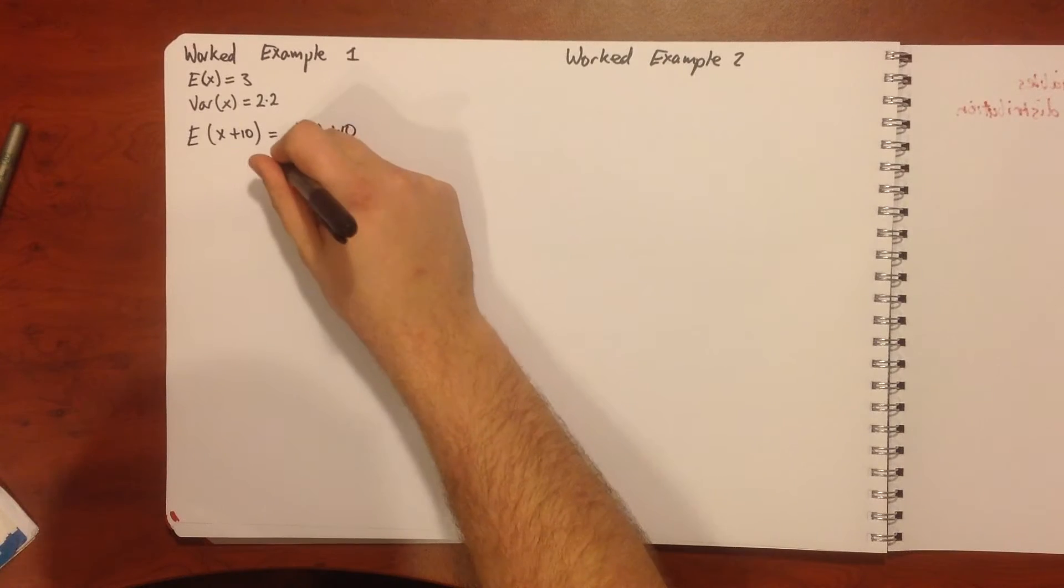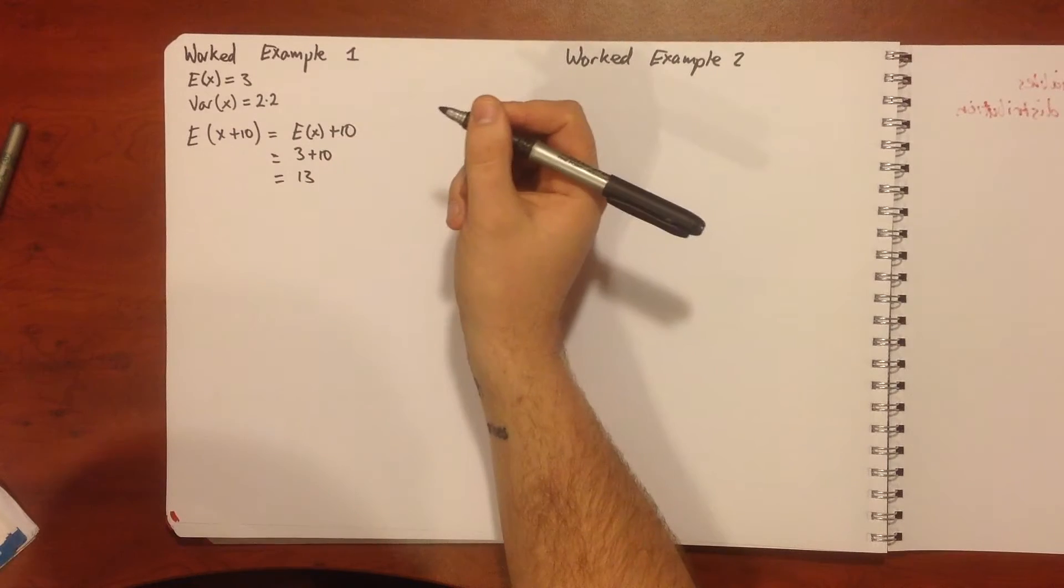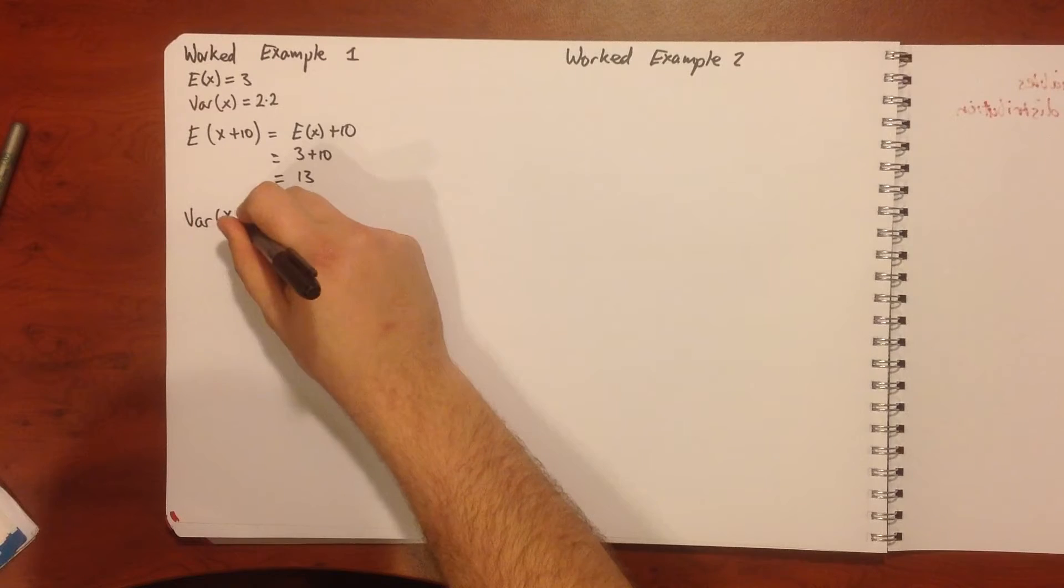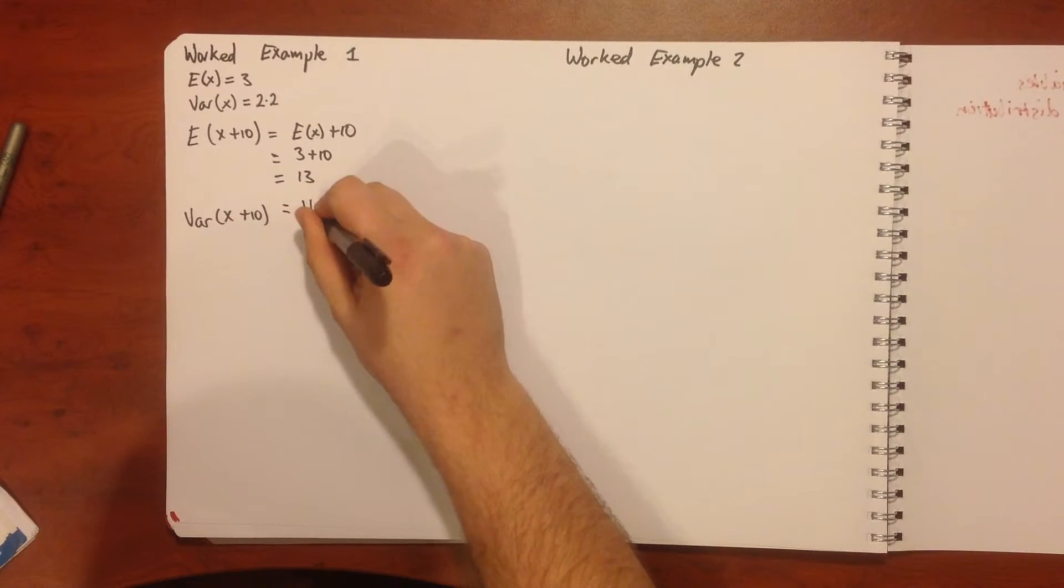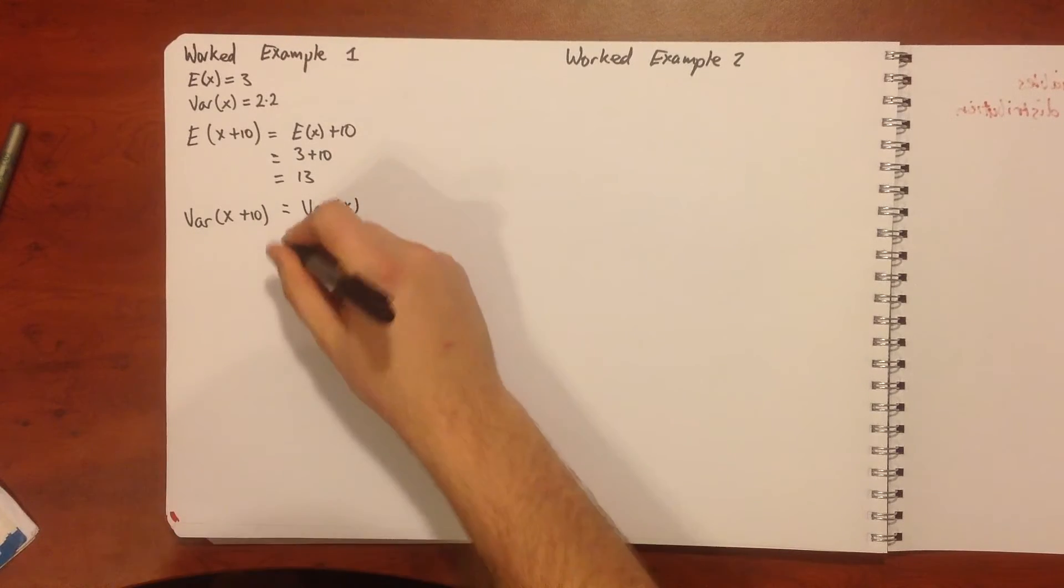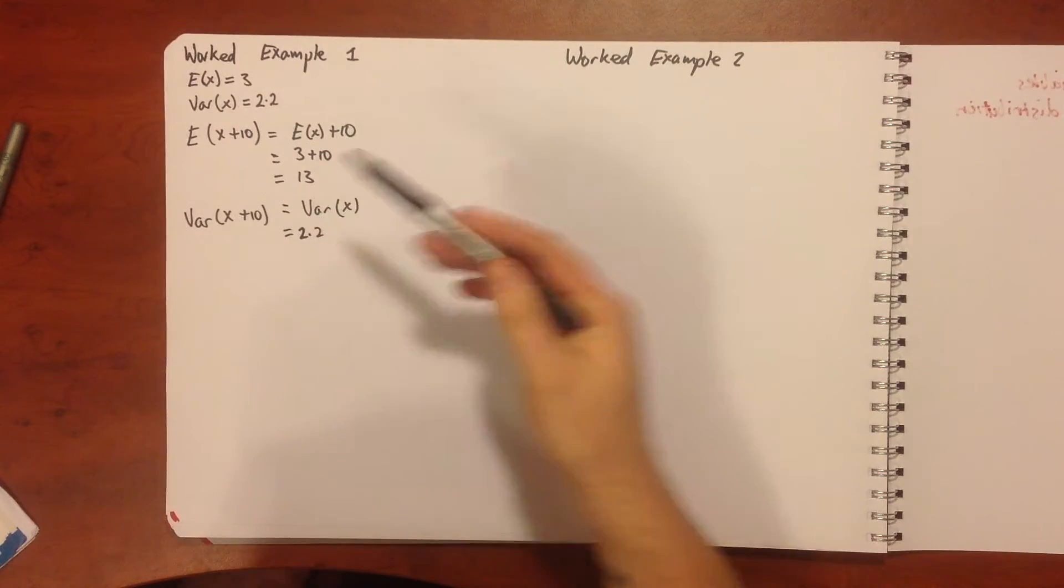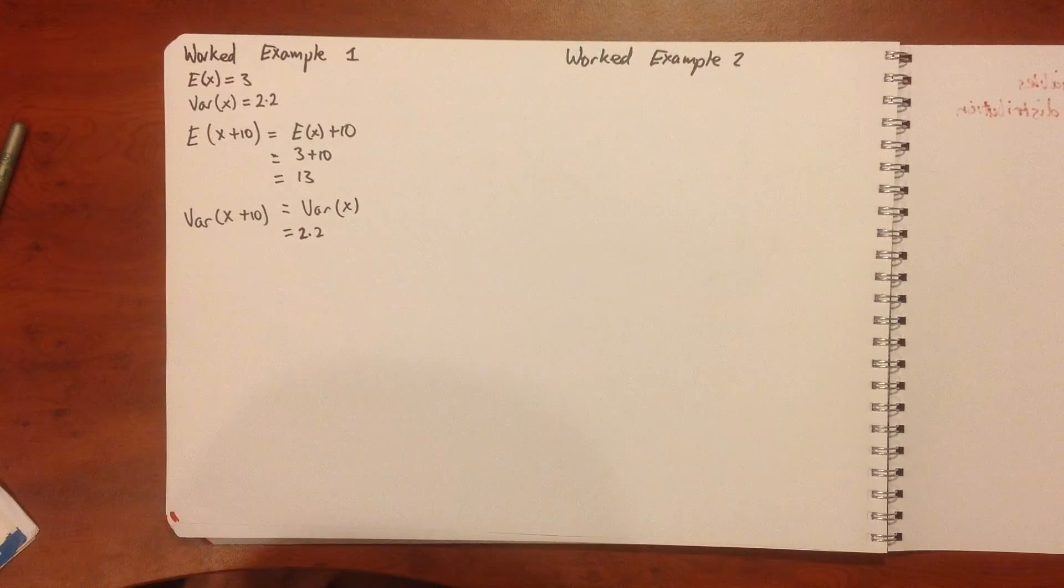What we're saying is what is E of x plus 10, and that's simply our E of x plus 10, which means we're 3 plus 10 which equals 13. Our variance of x plus 10 is simply equal to our variance of x. The plus 10 actually has no effect on our variance because if all of our data values have had 10 added to them, the amount that they vary compared to each other hasn't changed at all, so our variance is going to stay the same.